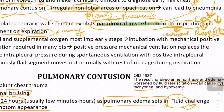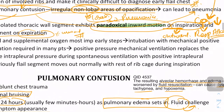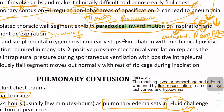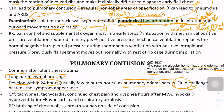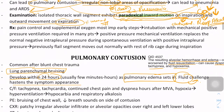Diaphragmatic injury that can occur after phrenic nerve injury will also have a paradoxical movement of the chest wall during respiration.